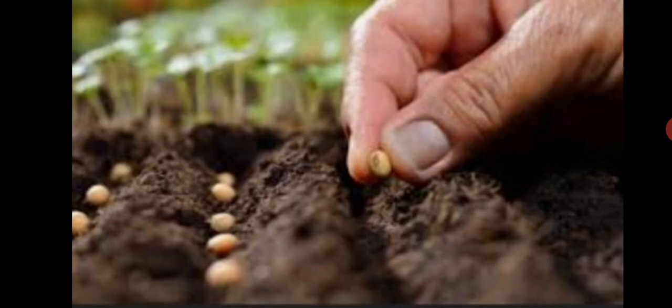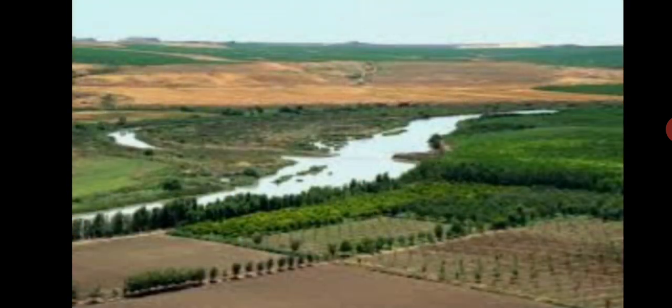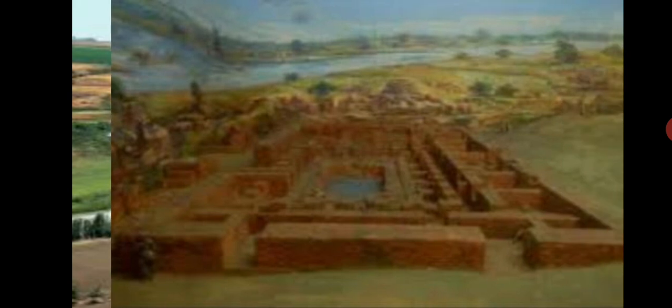When man realized that sowing of seeds in the soil leads to the growth of plants and yields crops, he started using soil as a resource. Gradually, he realized that the fertile soils along the riverbeds give higher yields, so he settled in valleys and started living there in groups. This led to the rise of ancient river valley civilizations.